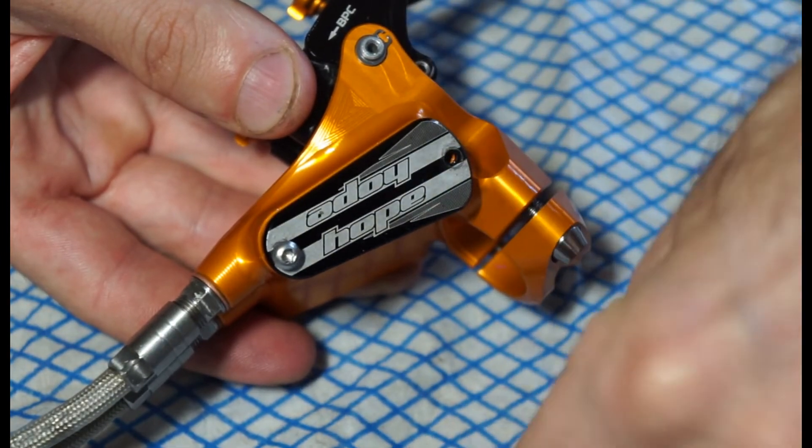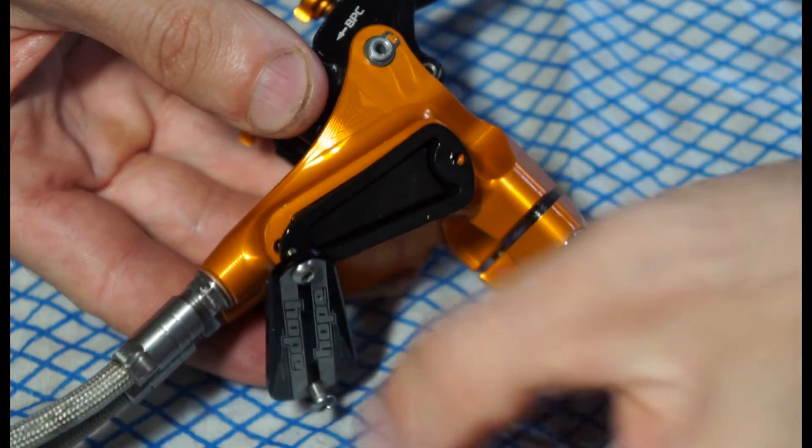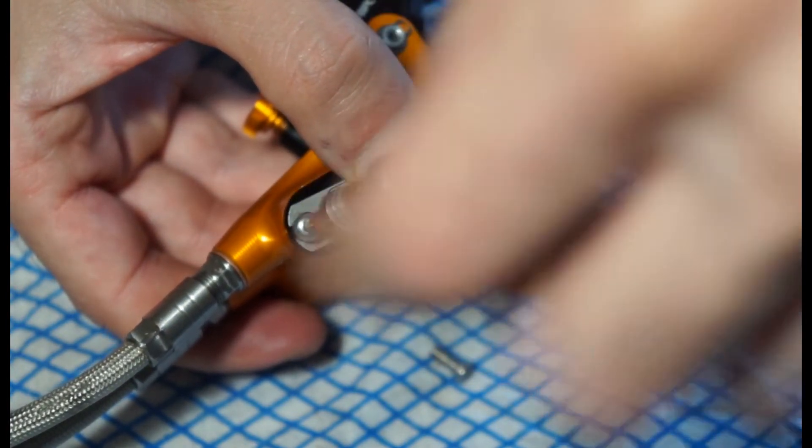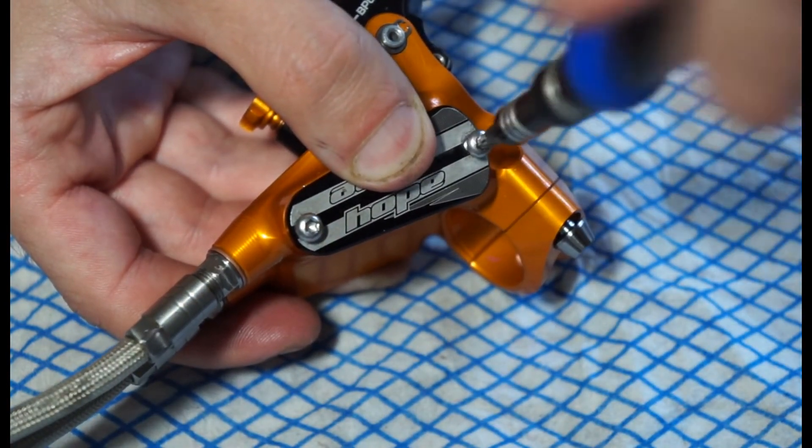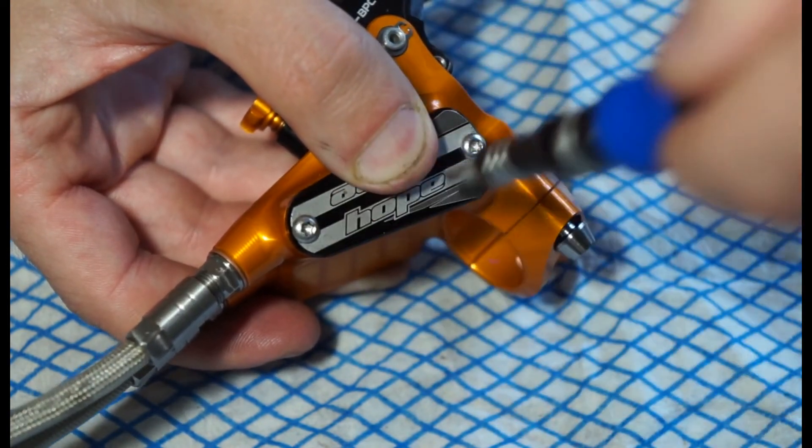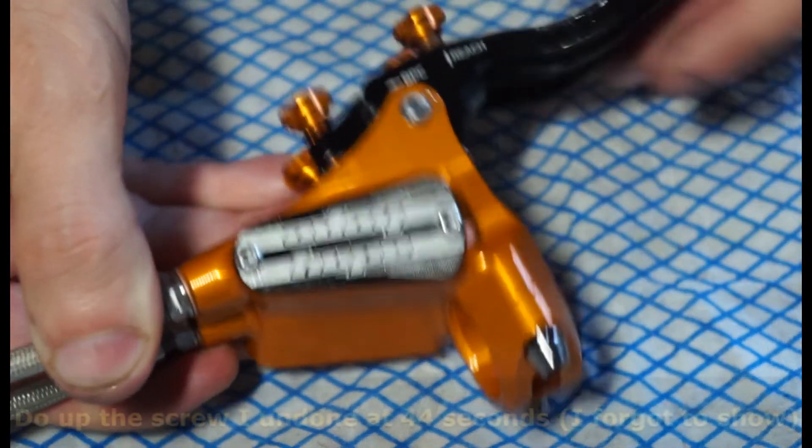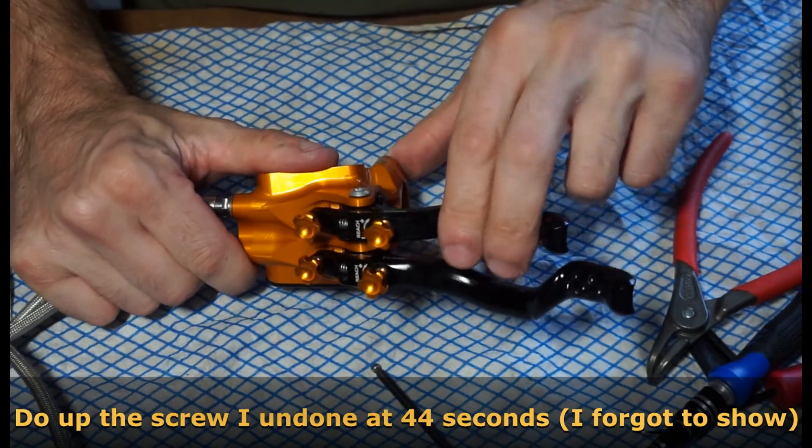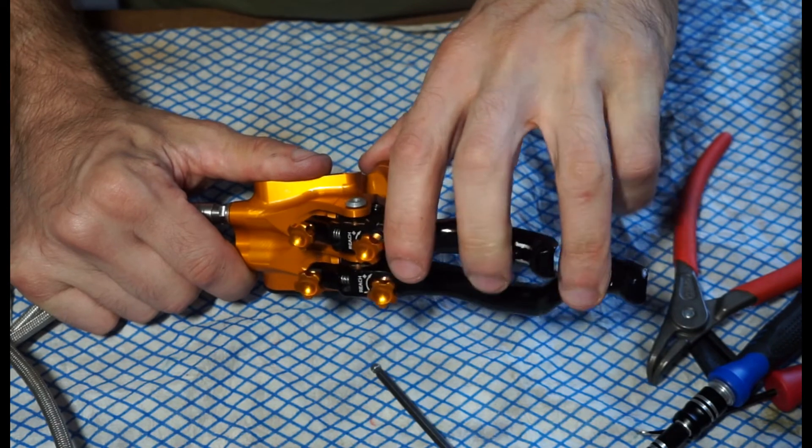And then on the other side, just do the same and that should be your Hope Duo lever sorted. Shame about the kind of system where it's not a symmetrical lever, but yeah. Hopefully that will be of use to some people who might have this lever.